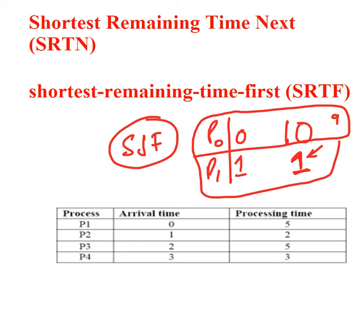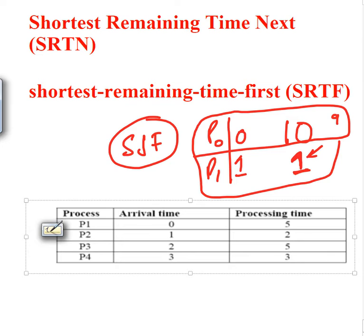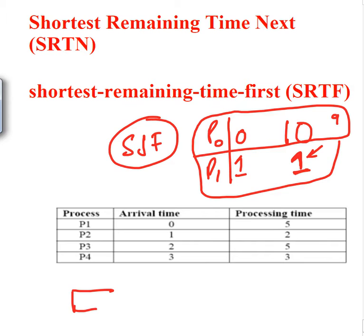Let's look at a proper example. We have arrival times and processing times. At time zero, only P1 is available, so we load it. In non-preemptive SJF you'd run it for all five units, but here at time one, P2 arrives. P1 has executed one unit so four units are left, and P2 has two units — so P2 has the shortest remaining time. We preempt P1 and load P2.